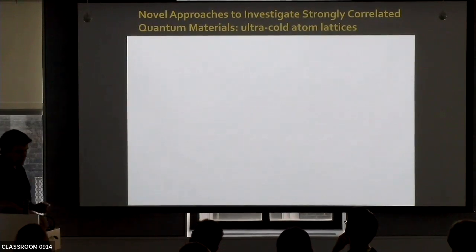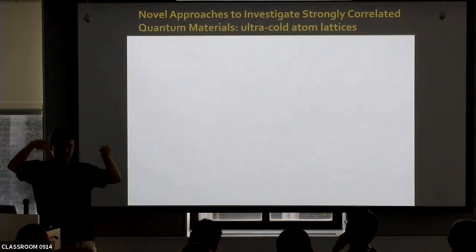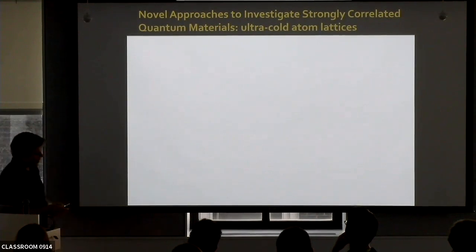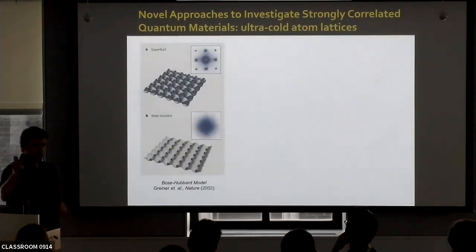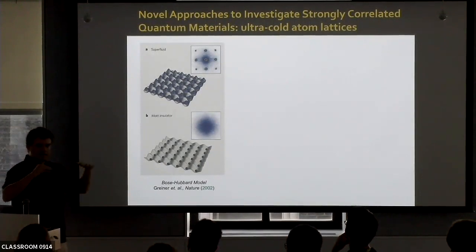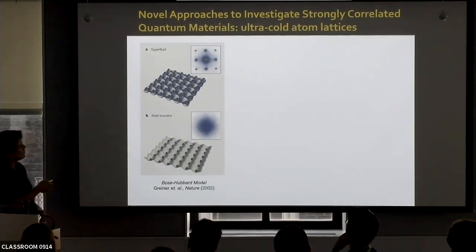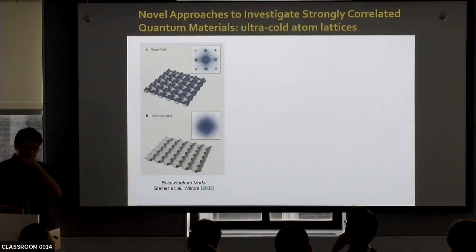What you do is take lasers, shine them at each other, and create a periodic potential for the atoms. Then you load these lattices with atoms. The atomic physicists have very refined control over the interaction strength of these atoms in the lattice, so that already in 2002, they demonstrated you can go between a superfluid and a Mott insulator by tuning the strength of interactions.